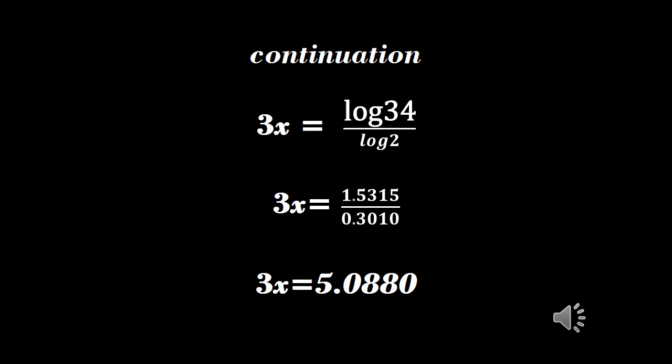If we check, log 34 gives us 1.5315 and log 2 is 0.3010. So we have 3x equals 1.5315 divided by 0.3010, and 3x equals 5.0880.